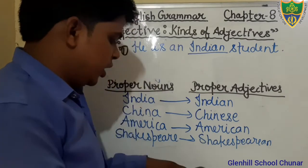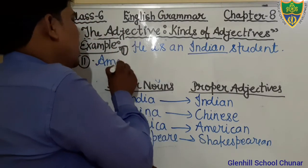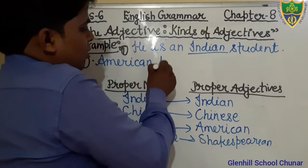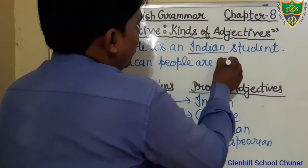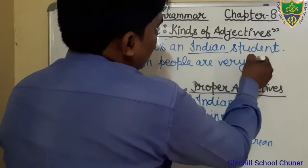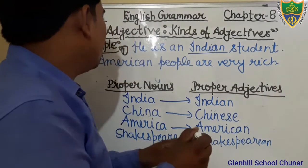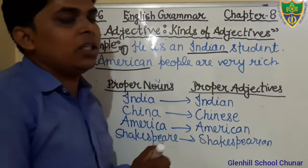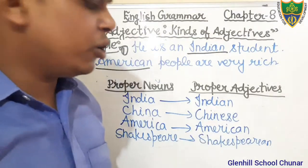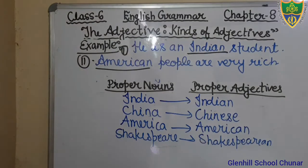Another example: 'American people are very rich.' In this sentence, the word 'American' is a Proper Adjective. I hope that you all have understood what is Proper Adjective — it is made from a Proper Noun.